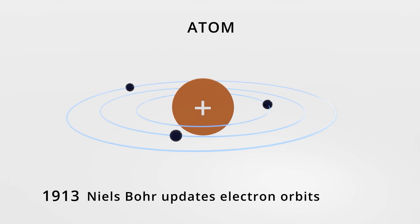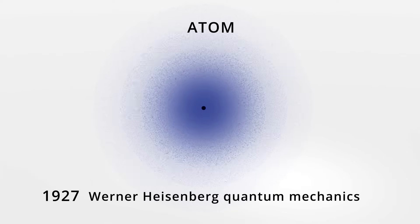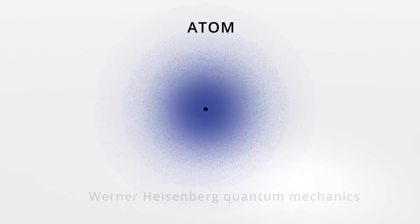Uncertainty principles introduced us to the concept of quantum mechanics, and the wave-like electrons became a probability cloud surrounding the nucleus. But what about the world of the nucleus? A tiny point of positive charge a trillion times smaller than the atom itself.